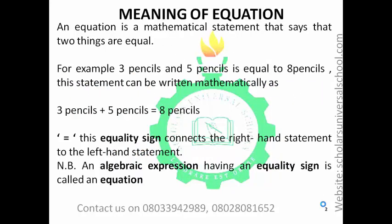We want to look at the meaning of equation. What is an equation? An equation is a mathematical statement that says that two things are equal. That is, if you have a certain value at one side — at the left-hand side — it must be equal to another value at the right-hand side. For example, if I have 3 pencils and 5 pencils, it's equal to 8 pencils.